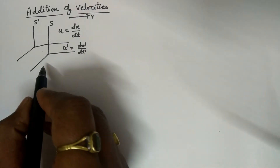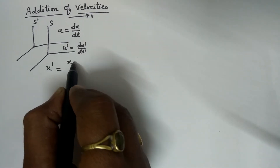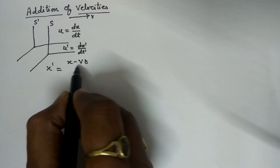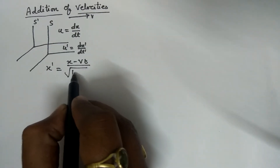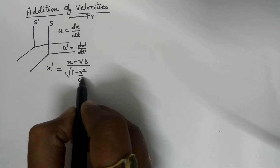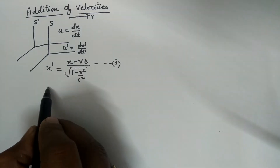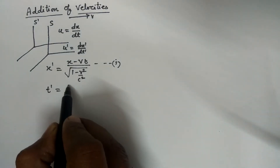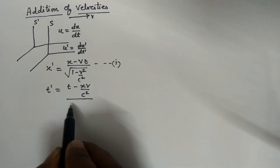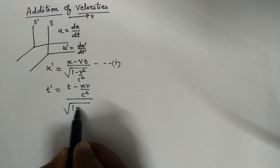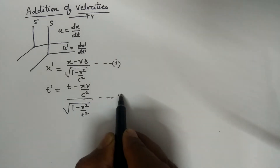As per the Lorentz transformation equation, x-dash equals x minus Vt upon under root 1 minus V-square upon C-square. This is equation number 1. And t-dash equals t minus xV upon C-square, upon under root 1 minus V-square upon C-square. This is equation number 2.